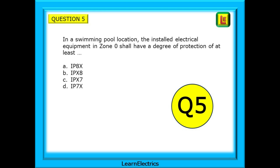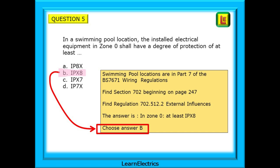Question 5: in a swimming pool location, the installed electrical equipment in zone 0 shall have a degree of protection of at least something. Swimming pool locations are in part 7 of BS 7671. Find section 702 beginning on page 247 and then find regulation 702.512.2 external influences. The answer is: in zone 0, at least IPX8 — answer choice B.